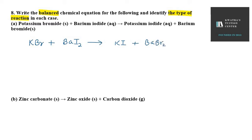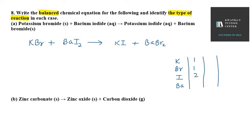So first of all, what do you need to do? Make a table again. Write down the names of all the elements: K, Br, I, and Ba. These are all our elements. Now we write the number of atoms on the left hand side. K is 1, Br is 1, I is 2, and Ba is 1.